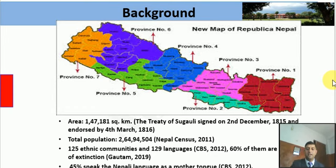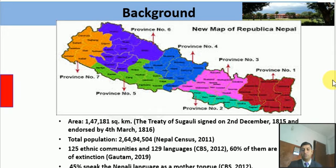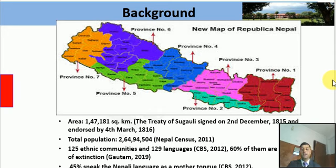Nepal has a total area of 147,181 square kilometers, established after the Treaty of Sugauli signed on 2nd December 1815 and endorsed on 4th March 1816. According to the Nepal Census 2011, the total population is 26,494,504. Nepal has more than 125 ethnic communities speaking 129 languages, according to the Central Bureau of Statistics 2012.